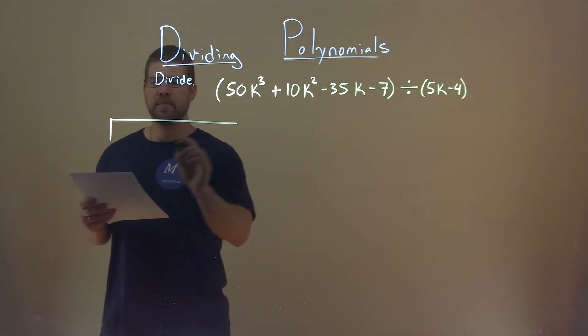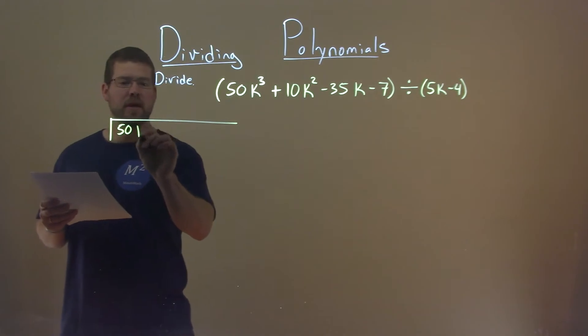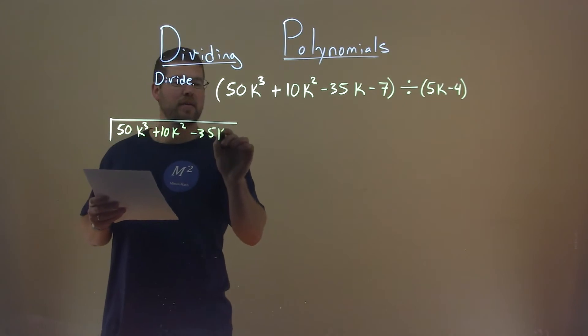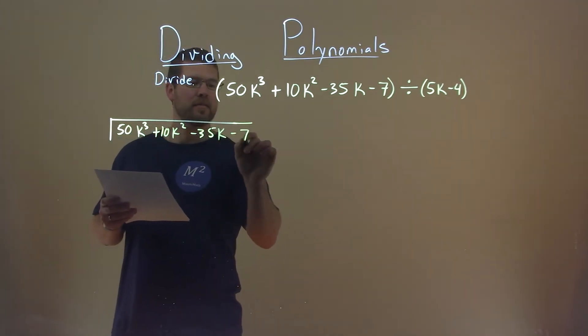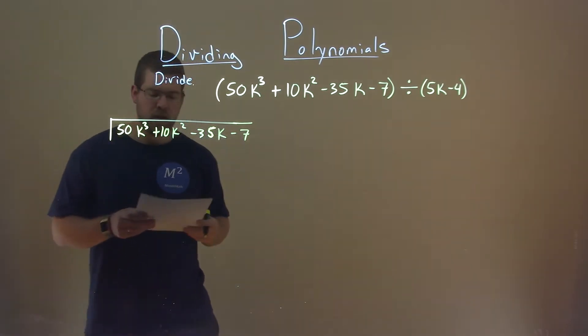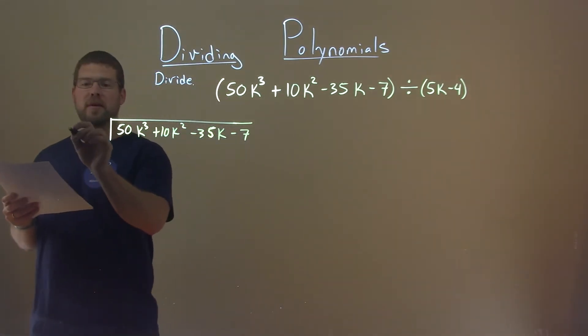We're going to put this on the inside. 50k to the third plus 10k squared minus 35k minus 7. And we're dividing that by 5k minus 4. So we can put that here, 5k minus 4.